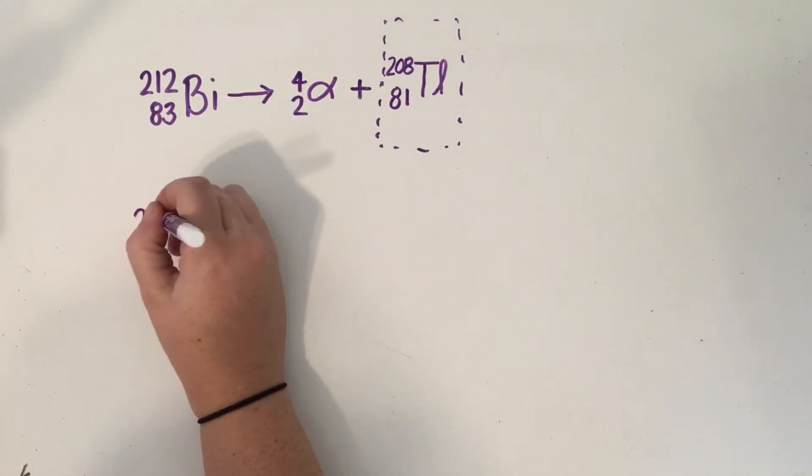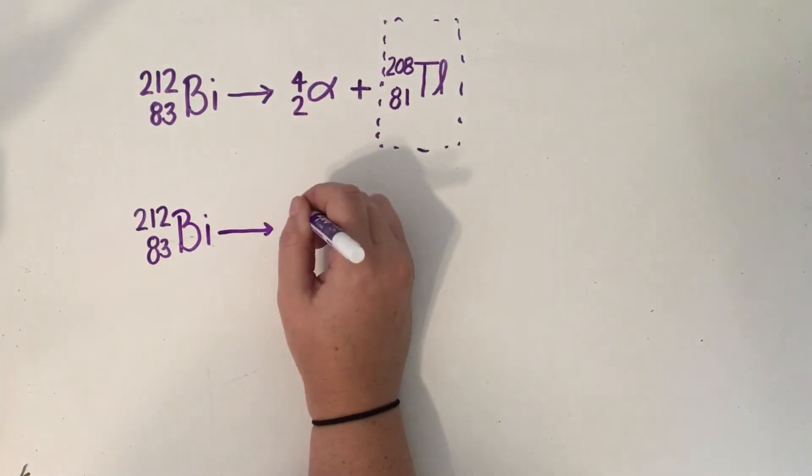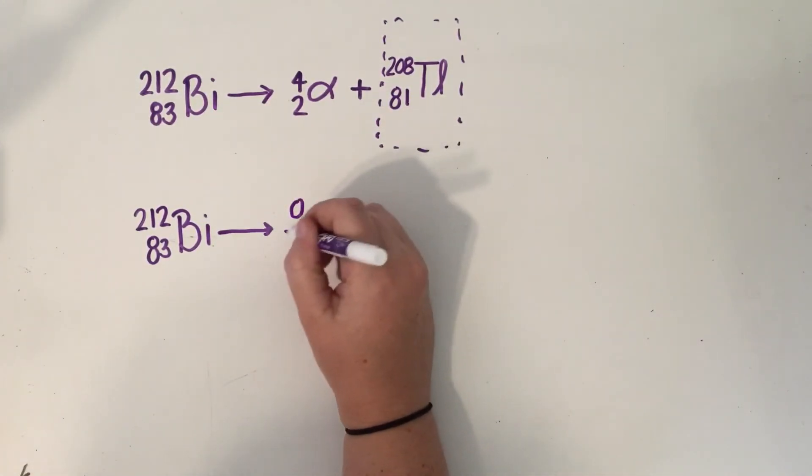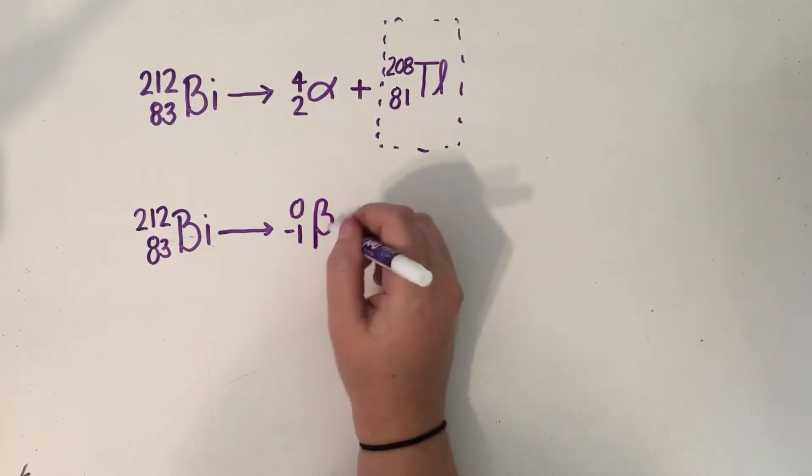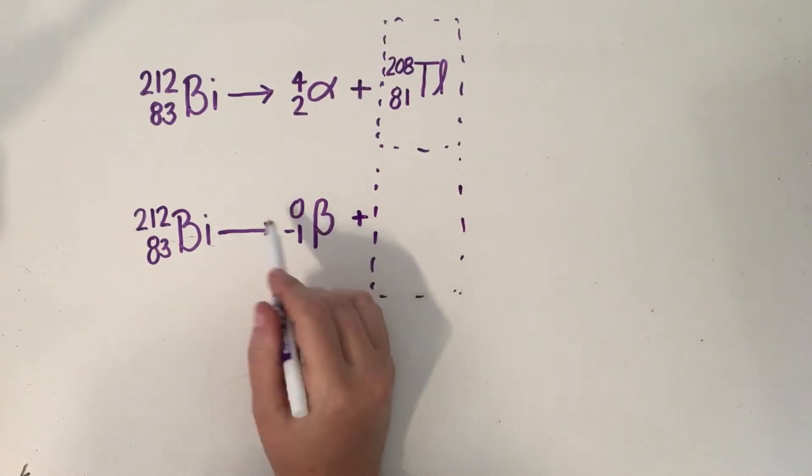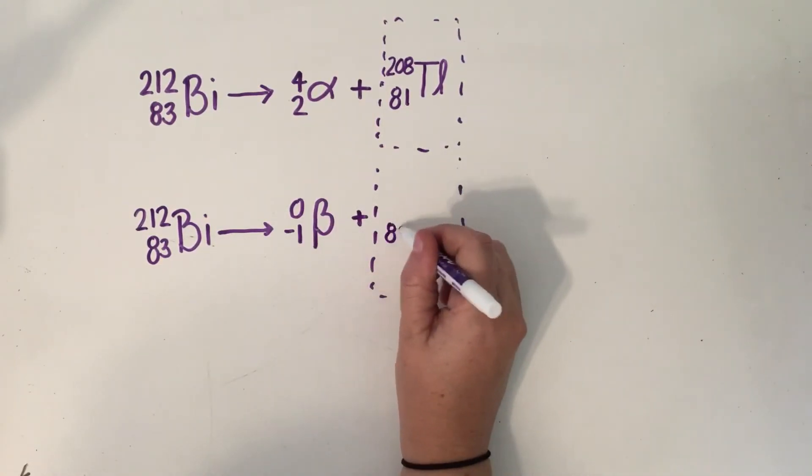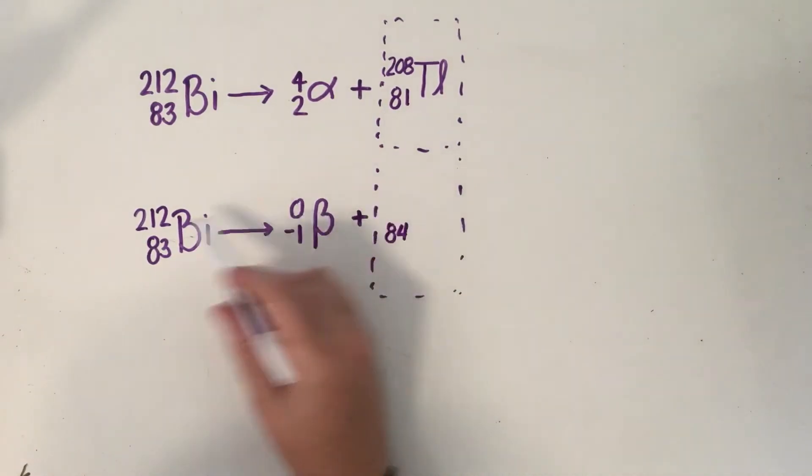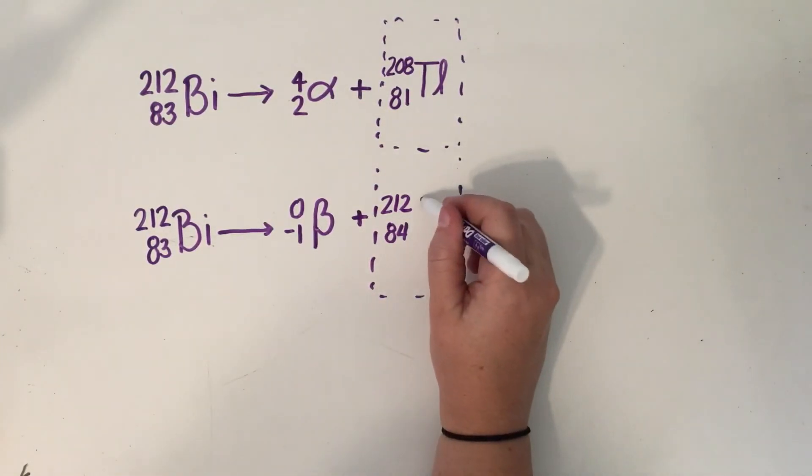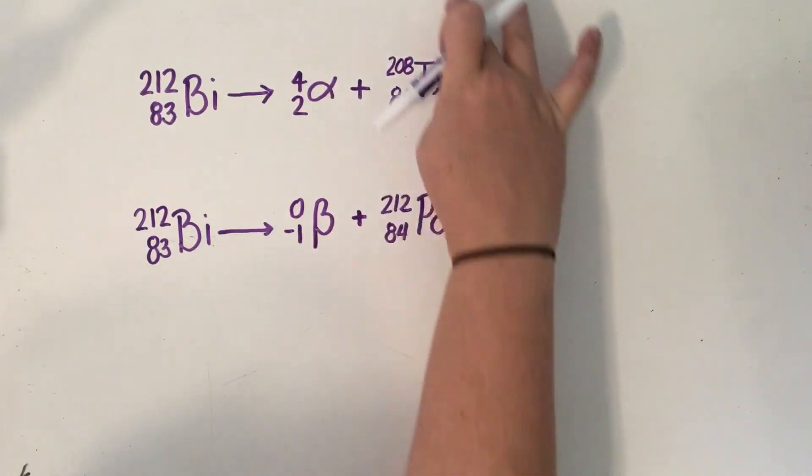We could do the exact same thing for bismuth, but this time I could have specified that I wanted you to use beta decay. If I tell you in the problem to use beta, then you're going to have to know that beta is 0 over negative 1 with the beta sign, or you could just use an electron since that's what a beta is like. Plus, and now we just need to fill in the box. Now this one's a little different because it's a negative 1. So algebraically, what plus negative 1 gives you 83? This actually goes up to 84. And then what plus 0 gives you 212? Well, that stays 212. We look up atomic 84, and atom 84 would be polonium, that's Po. So our resulting nucleus here would be within an atom of polonium.